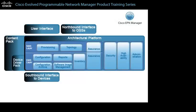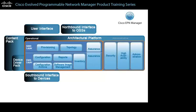The diagram illustrates Cisco EPN Manager product architecture and the relationships of its functions. In the diagram, the architectural platform functions are organized by operational functions, which support the tasks that network operators perform, and administrative functions, which support the tasks that administrators perform.